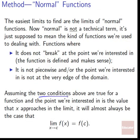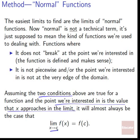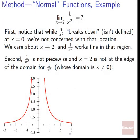If these conditions are met — it isn't breaking down, it's not piecewise, and the point isn't at the edge of the domain — then it's really easy to figure out what the value is going to be. The limit as x goes to c of f(x) is as simple as just plugging c in for x and getting f(c). So let's look at an example: the limit as x goes to 2 of 1 over x squared.